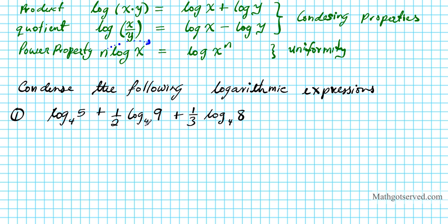Looking at all three logarithmic terms, notice that this log has a coefficient, this log has a coefficient, and this one doesn't — so they're not uniform. We're going to use the power property to create uniformity with log base 4 across all three expressions, then apply the product property. The logs must not have any coefficients prior to condensation, so we have to address that by using the power property to power up.